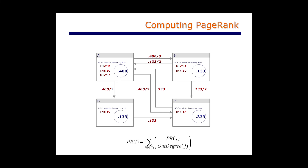For our simple example of four web pages, those final values are two-fifths (0.4) for page A, two-fifteenths for pages B and D, and one-third for page C. I'd like you to pause the video one final time...